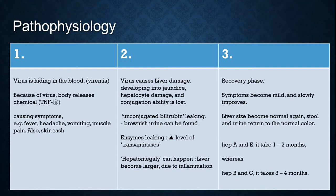Hepatomegaly is the condition where the liver becomes larger due to liver inflammation. The last stage is the recovery phase — symptoms become mild and slowly improve. The liver size returns to normal, and feces and urine return to normal color from the brownish color. It usually takes hepatitis A and E one to two months, whereas hepatitis B and C take longer, about three to four months.